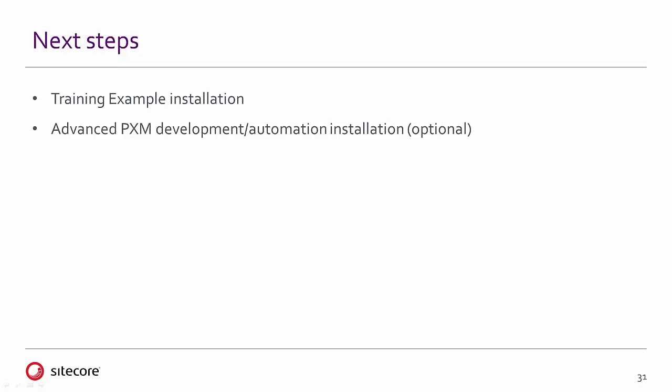Now that we have the PXM core components installed as well as the InDesign connector, we can do one of two things. We can install the training examples — the Launch Sitecore site, content, and document design — to do some simple PXM development. Or we can go one step further and install the components necessary for advanced PXM development and automation, which would be InDesign Server and its dependencies.